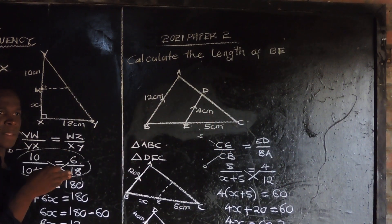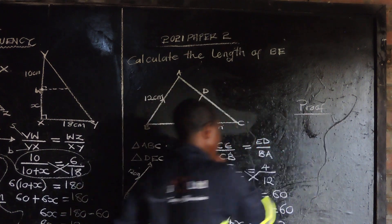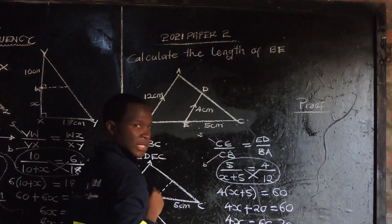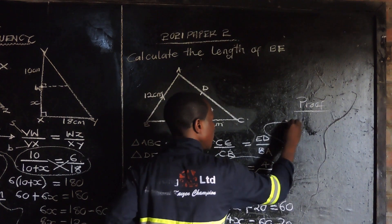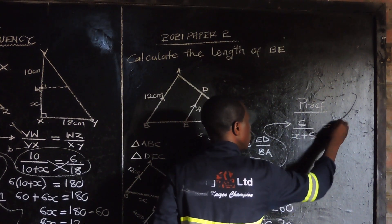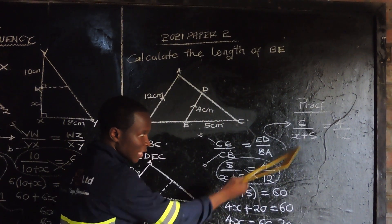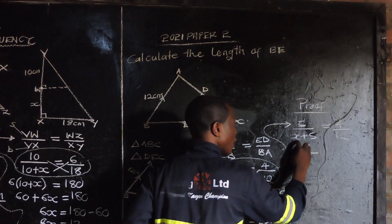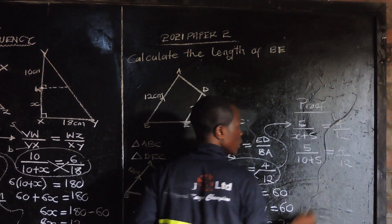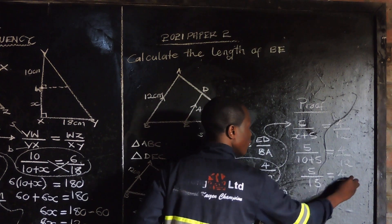Let us try to verify if our answer is correct. We use the pair: five over X plus five equals four over twelve. Substituting X equals ten, we get five over ten plus five equals four over twelve, which is five over fifteen equals four over twelve. Simplifying: five into five is one, five into fifteen is three — giving one third. And four into four is one, four into twelve is three — also giving one third.